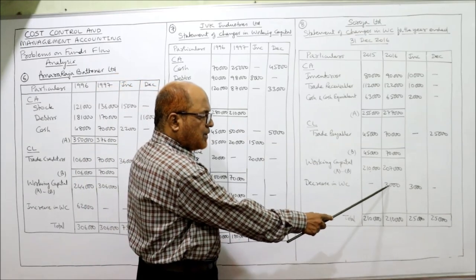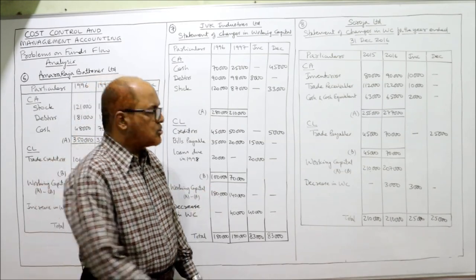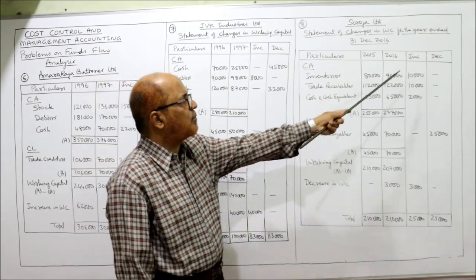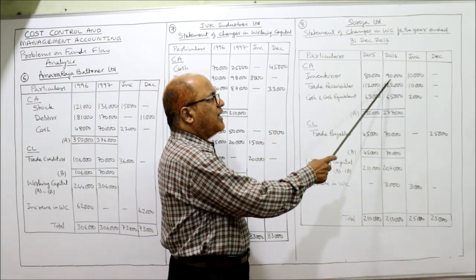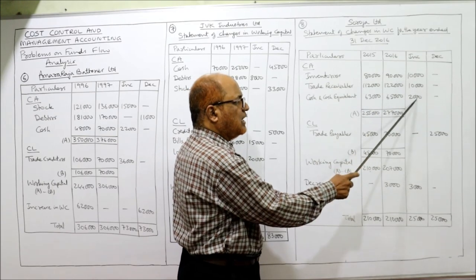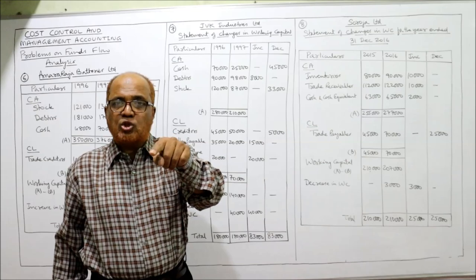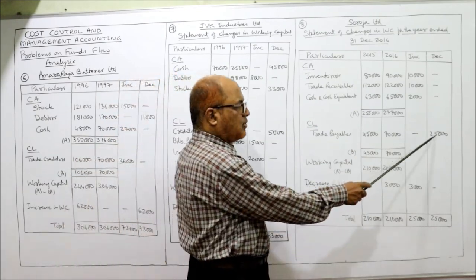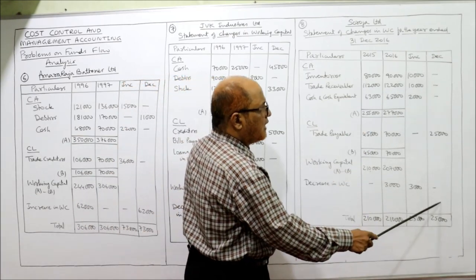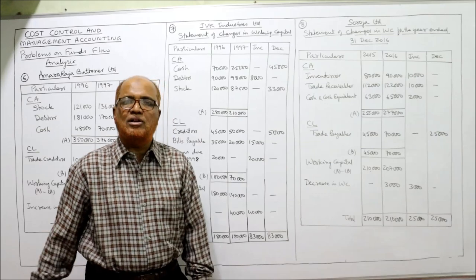Decrease in working capital of 3,000 is taken in the increase column. To verify: inventories increased from 80,000 to 90,000 — increase column, 10,000. Trade receivable increased from 1,12,000 to 1,22,000 — increase column, 10,000. Cash increased from 63,000 to 65,000 — increase column, 2,000. Trade payable increased from 45,000 to 70,000 — decrease column, 25,000. Total increase and decrease both equal 25,000. Our answer of 3,000 decrease in working capital is confirmed correct.